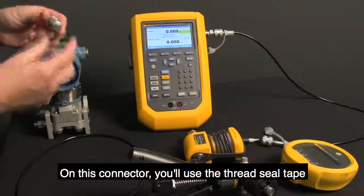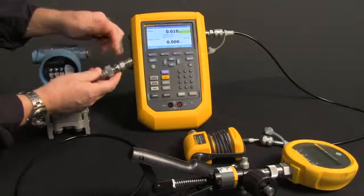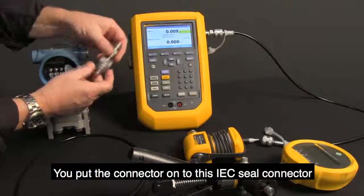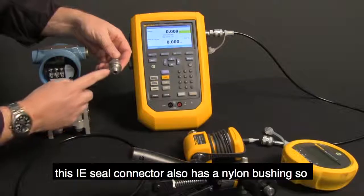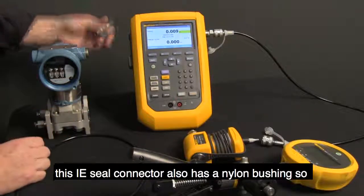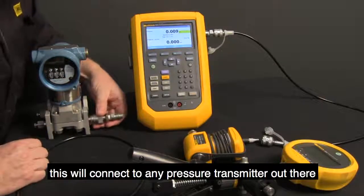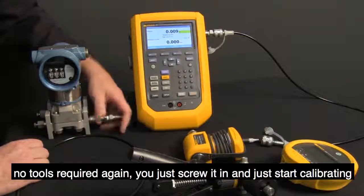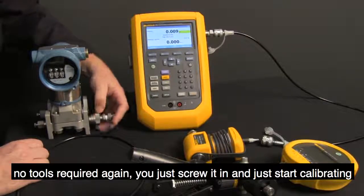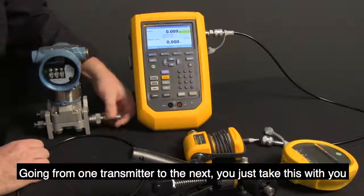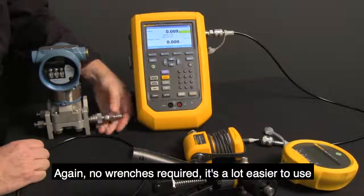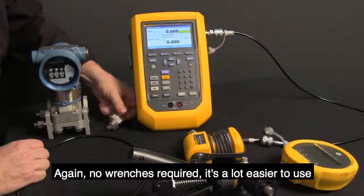On this connector, you use the thread seal tape and put the connector on to this IEC connector. This IEC connector also has a nylon bushing, so this will connect to any pressure transmitter out there. No tools required again - you just screw it in and start calibrating. Going from one transmitter to the next, you just take this with you. Again, no wrenches required, it's a lot easier to use.